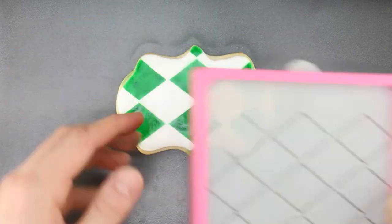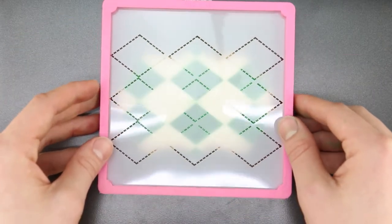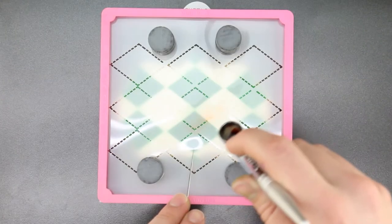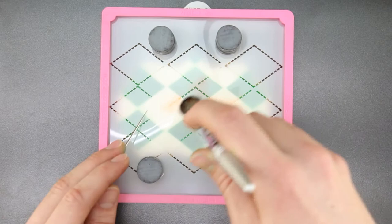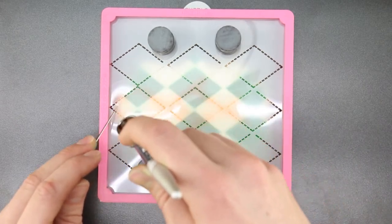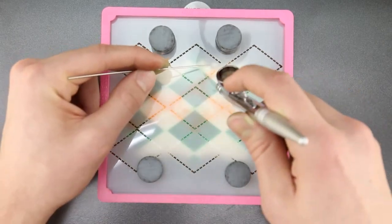Load the overlay stencil into the Stencil Genie and line it up on your cookie. Test the airflow on a piece of paper towel before airbrushing the design. Use a spare airbrush needle to hold the stencil flat anywhere it may not lay flat.